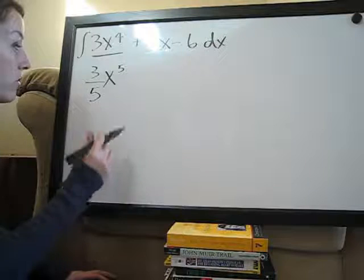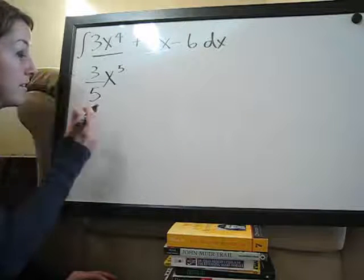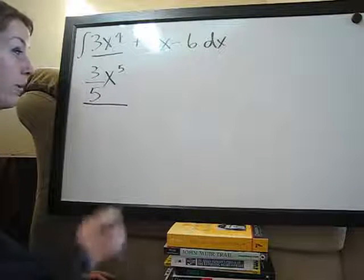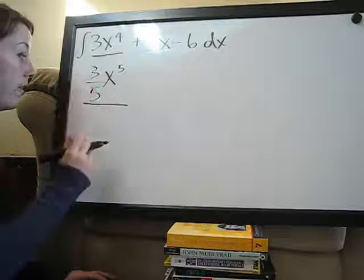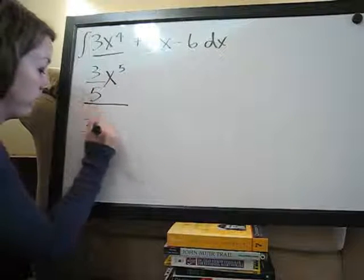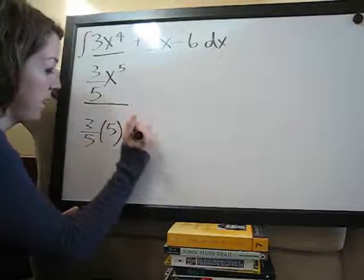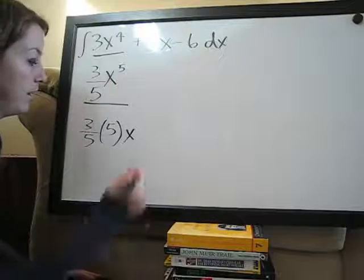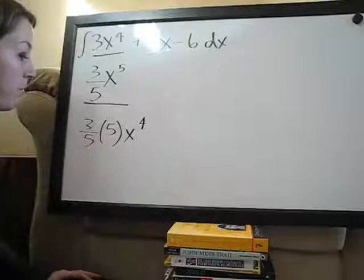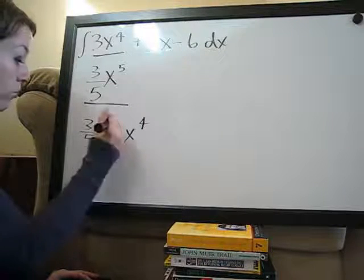We know that that's true because if we were going to take the derivative of this term, what would we do? We would multiply the exponent by the coefficient, so we'd have 3 over 5 times 5x, and then we would subtract 1 from the exponent, and we would get 4. Or, of course, these would cancel,